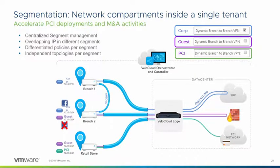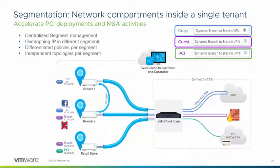Segmentation breaks out at a hub site — which can be a virtual edge deployed into Amazon — where you can attach a network to a physical interface. Traffic between segments cannot be leaked within the SD-WAN overlay itself, but can be facilitated through a centralized firewall such as a full UTM appliance on the data center side.